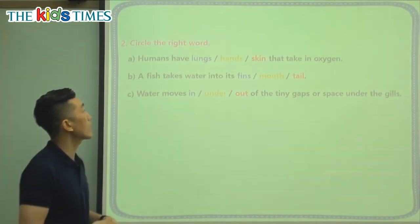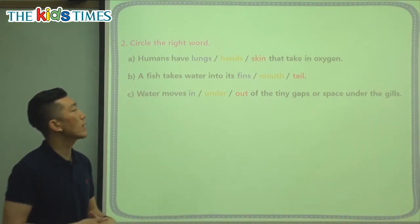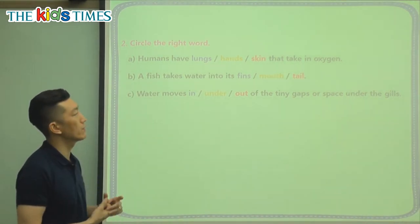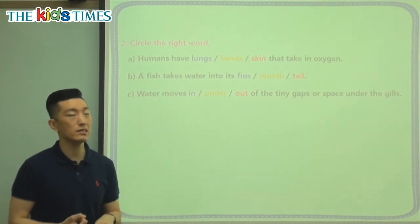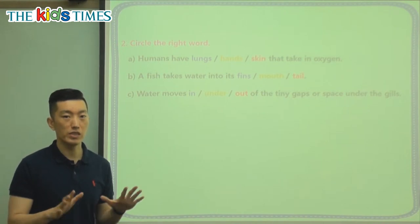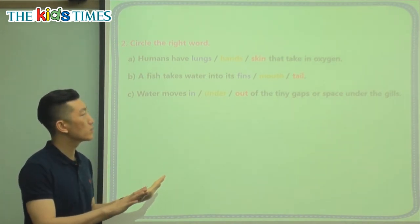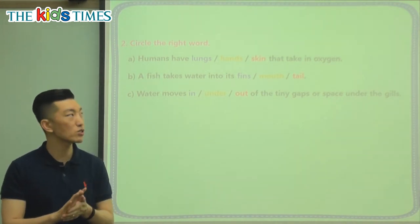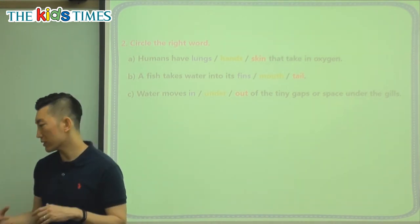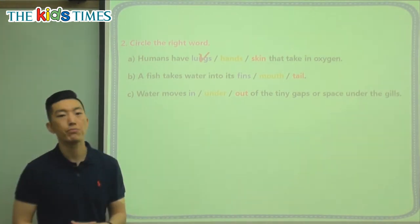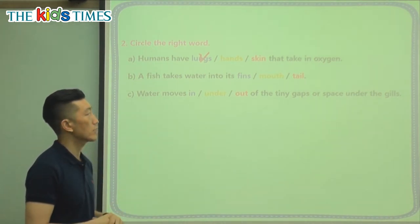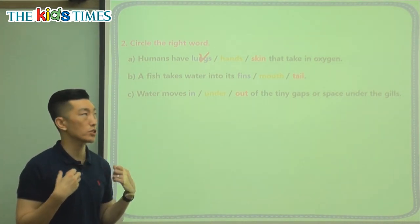Let's look at the last questions. It says humans have something that takes in oxygen — what do we have? We have hands and skin, but where do we take in oxygen when we breathe? Do we breathe with our hands? Do we use our skin to breathe? No — we use the organ inside our body called the lungs. Fish don't have lungs, but we can find our lungs deep inside our chest.